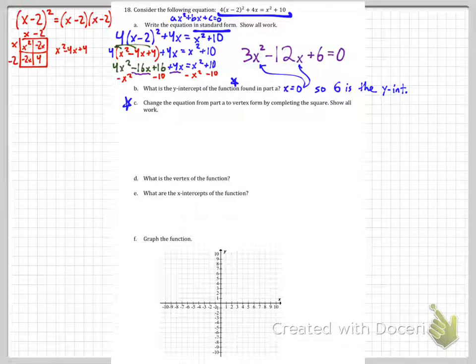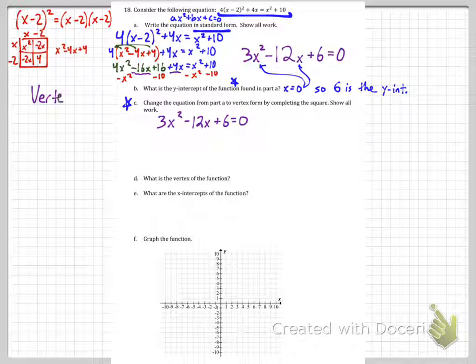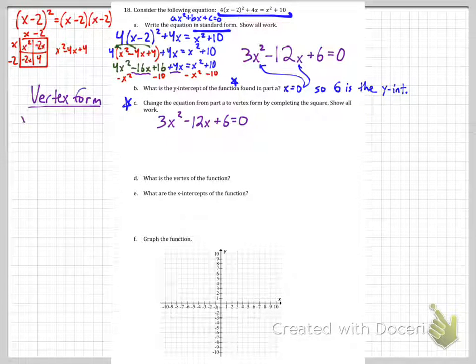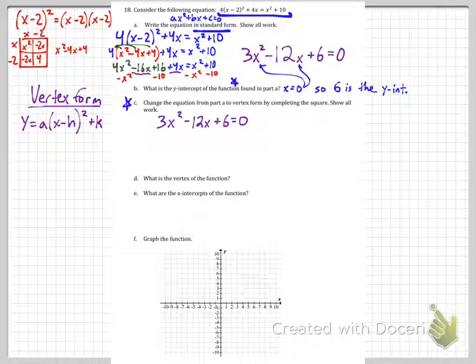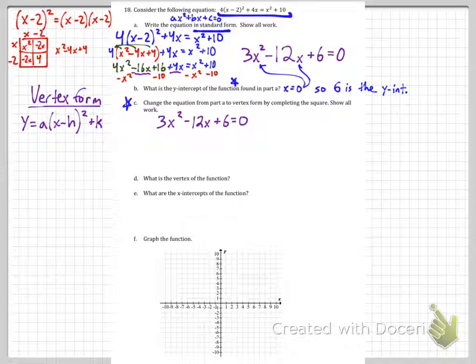Alright, part c: change the equation from part a to vertex form by completing the square. Completing the square is the one skill that's very tricky, so I'm going to take you through how to do that. If you do not want to learn something new right now, you may skip this part and go on to part d. And honestly, part d can help you figure out part c in reverse. So first thing we have to know is what is vertex form? Well, vertex form is when you write equations like this: a(x-h)² + k. The reason it's called vertex form is because (h,k) is our vertex.